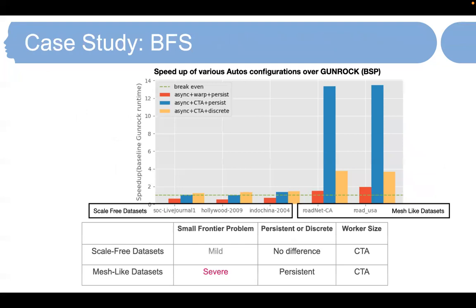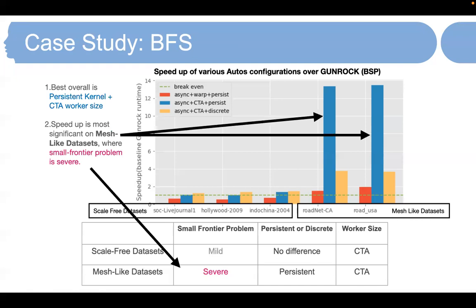Our first case study is BFS. We compare four different implementations. GUNROCK is the state-of-the-art graph analytics GPU implementation, and we choose GUNROCK BFS as our baseline. We also implement three variants of BFS on ATOS: asynchronous warp worker with persistent kernel, asynchronous CTA worker with persistent kernel, and asynchronous CTA worker with discrete kernel. We plot the speedup of those three variants over the baseline. The best performing implementation is ATOS asynchronous with persistent kernel and CTA worker size. The speedup is most significant on mesh-like datasets, where the small frontier problem is severe.